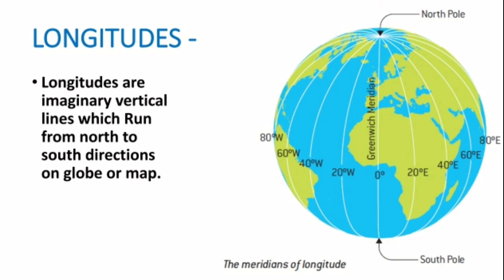The distance between longitudes is greatest at the equator. These lines are also known as meridians. The main line, which passes through Greenwich near London, is called the Prime Meridian, marked at zero degrees. The Prime Meridian also divides the Earth into two equal halves: the Eastern Hemisphere and the Western Hemisphere. Lines in the east are measured in east degrees, and lines in the west are measured in west degrees.